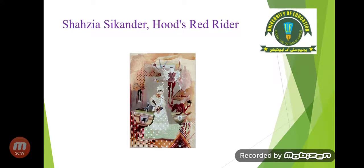This is the famous painting by Shazia Sikander titled 'Hood's Red Rider.' In this painting we can see different connotations from both religions. On the back side there is a figure having multiple hands and holding different weapons in each hand, looking more like a warrior — but it has some relationship with the goddess found in Hindu religion, which has multiple hands as we see in their culture.